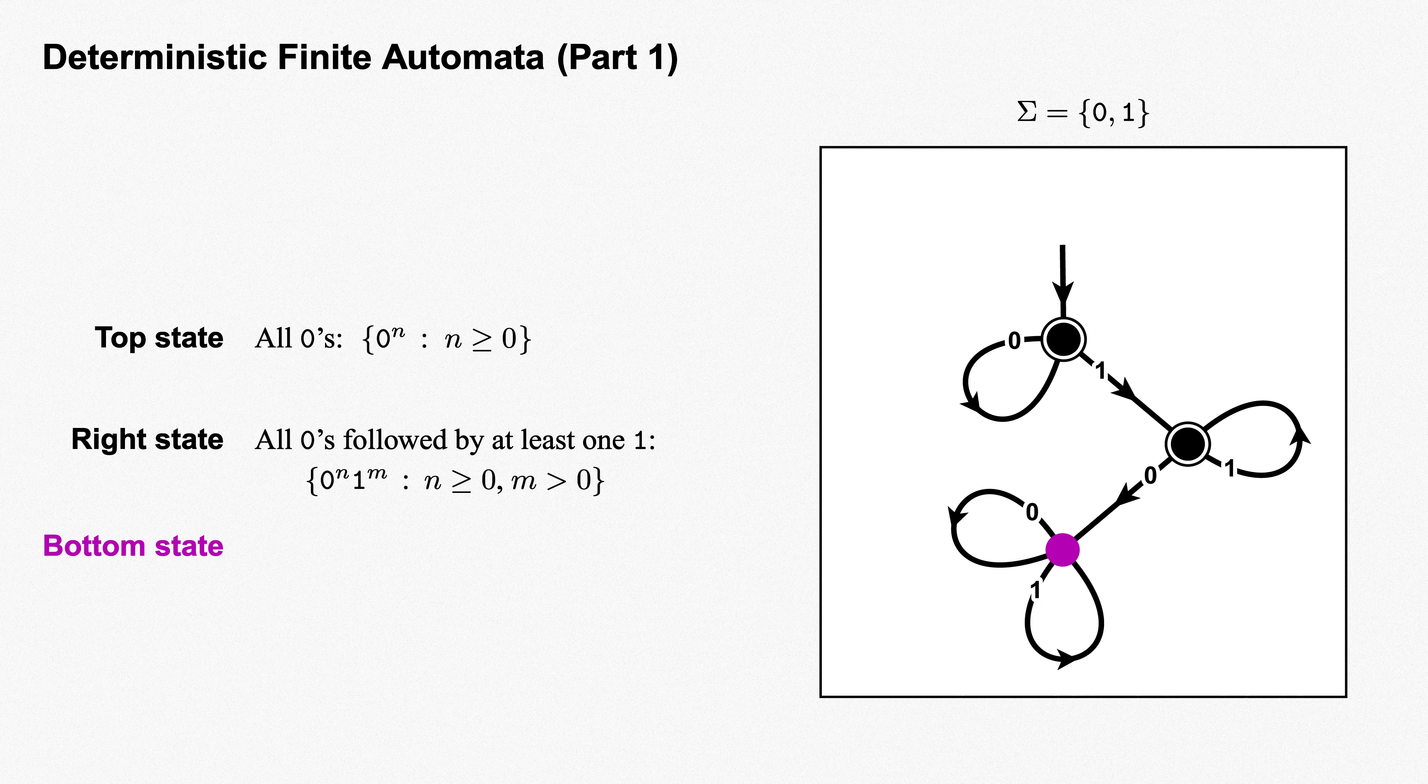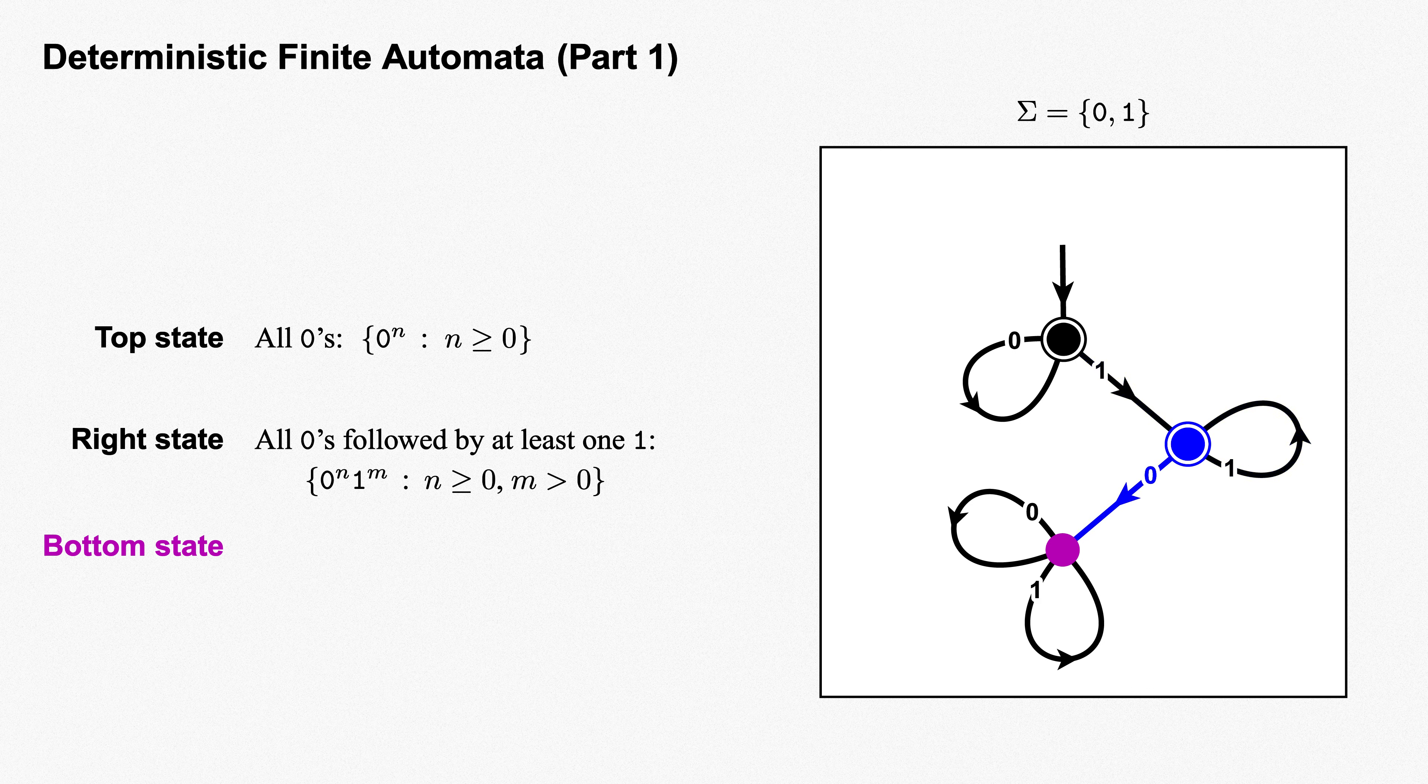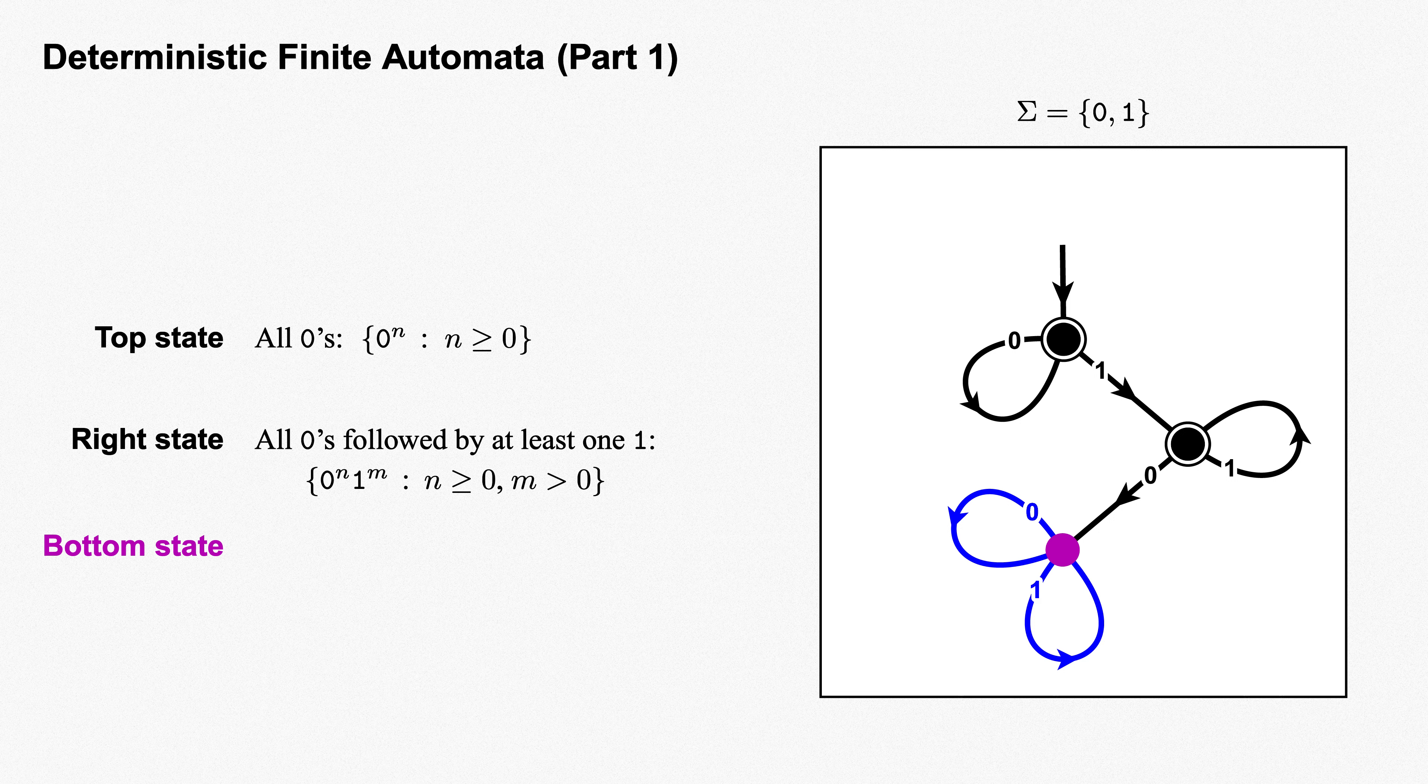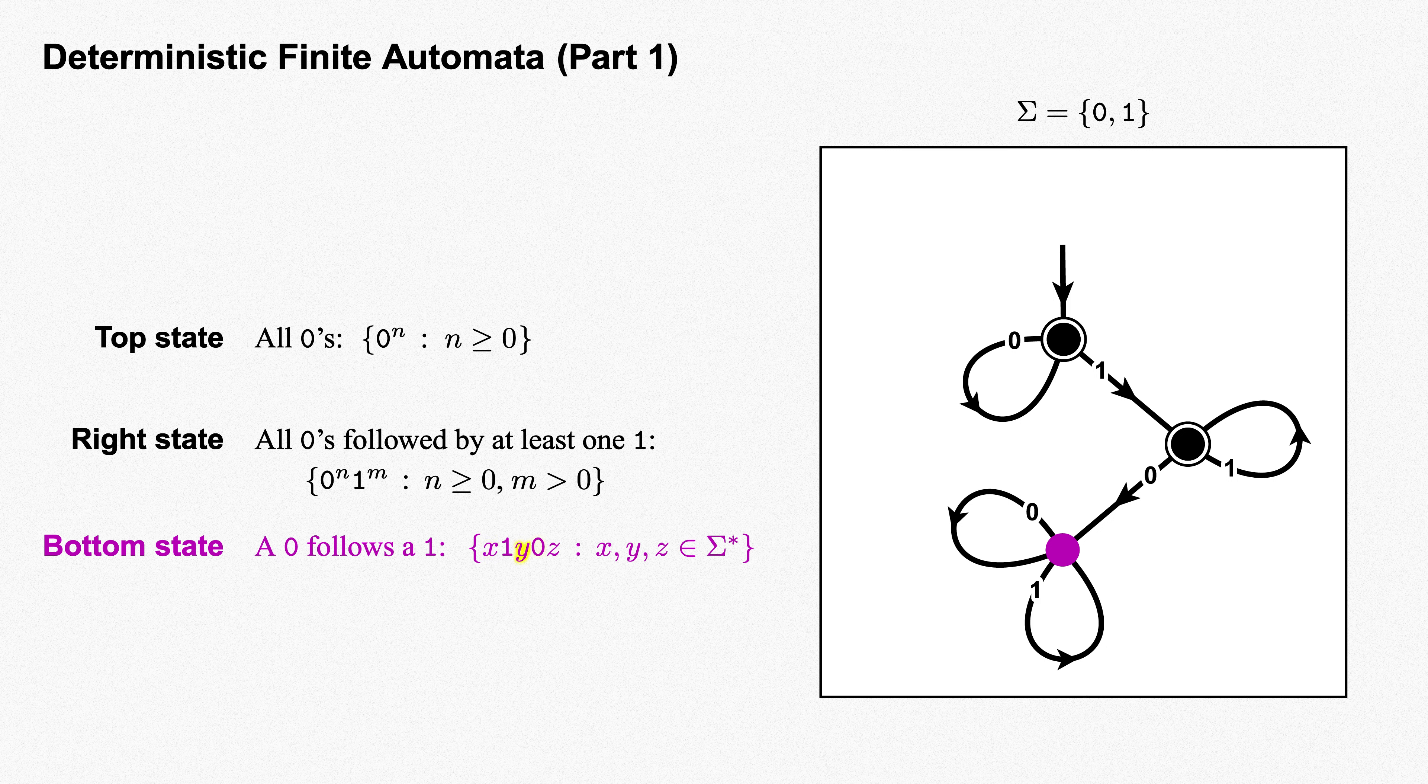The bottom state must correspond to every remaining string. Any non-negative number of zeros and then a positive number of ones to get us to the state at the right, followed by a zero to move us to the bottom state. Once there, every transition from the bottom state returns us to the bottom state. So this is a sink state, like a black hole. Once in this state, there's no way out no matter what symbol comes after that zero. What actually characterizes a string that lands us on this state is that it has at least one one to get us to the state at the right, then a subsequent zero to move us to the bottom state. So we could think of this state as coming from every string in which a zero follows a one. As a set of strings, x, the symbol 1, y, the symbol 0, z, where x, y, and z are any strings in sigma star. There are other, perhaps simpler, ways to express this set of strings, but this will do.